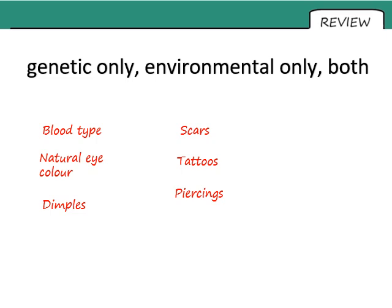That leaves three in the 'both' column — things affected by both genetics and environment. Weight: yes, there can be genetic factors, but your lifestyle plays just as big a part, if not bigger. Height is similar: although inherited factors affect your height, your lifestyle plays a big part too. Finally, natural hair color: you can dye your hair, but even if you don't, spending a lot of time in intense sunlight will naturally lighten it — so although genetics generally decides your natural hair color, your environment can also play a big part.